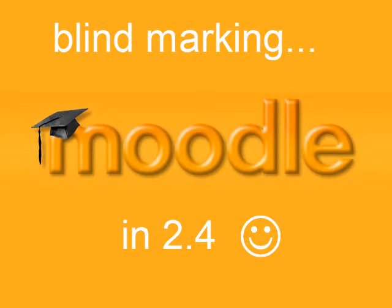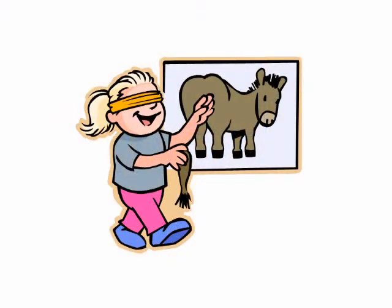This video is about a new feature in Moodle 2.4, out in December, called Blind Marking. Blind marking is when the teacher doesn't know the identity of the student whose work they're grading, and this can be very useful for avoiding any potential bias, for instance when grading exams or assessments.